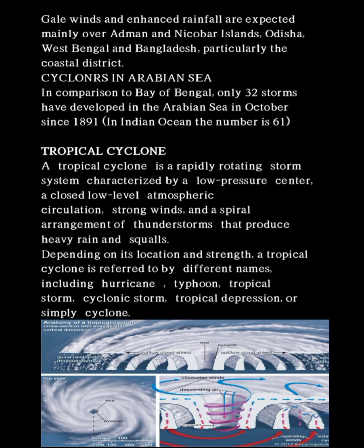A tropical cyclone is a rapidly rotating storm system characterized by a low pressure center, a closed low-level atmospheric circulation, strong winds, and a spiral arrangement of thunderstorms that produce heavy rain and squalls. Squalls means a sudden storm with strong winds.